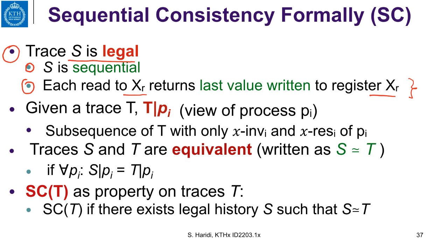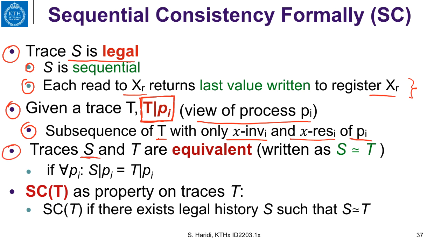Now let us look at another notion: the view of each process P_i in a trace, denoted accordingly. Given a trace T, the view of process P_i in that trace is the subsequence of T containing only the invocations and responses that happen at process P_i. So you take the trace and remove all invocations and responses from every process except P_i to get the view of P_i. We say two traces S and T are equivalent if, for any process in the system, the view of that process in trace S is exactly the same as its view in trace T.